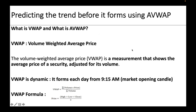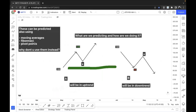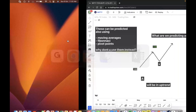What is VWAP? Volume Weighted Average Price is a measurement that shows the average price of a security adjusted for its volume. 'Adjusted for its volume' is very important. VWAP is dynamic — it forms each day from 9:15 AM. The VWAP formula is: sum of (price × volume) divided by sum of volume, where price = (high + low + close) / 3. You don't need to worry about the formula when you have TradingView.